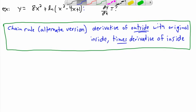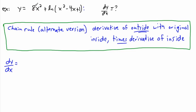Let's solve this. dy/dx — the first part is easy. For 8x squared, the 2 comes in front, so 2 times 8 is 16, times x to the power of 1. So the derivative of that part is just 16x. This next part, however, is harder.